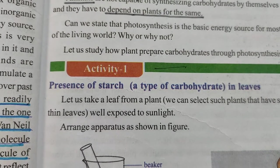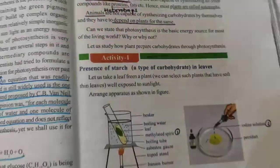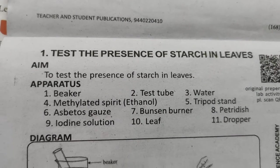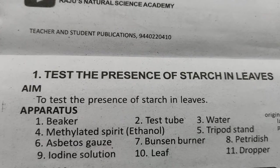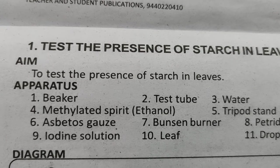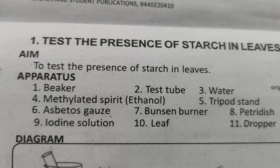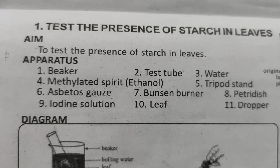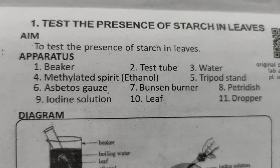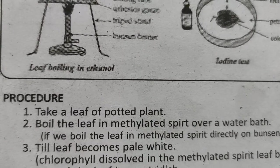To test the presence of starch in the leaf, apparatus required: beaker, test tube, water, methylated spirit, tripod stand, asbestos gauze, Bunsen burner, Petri dish, iodine solution, leaf, and dropper. The two chemicals used here are methylated spirit and iodine solution.